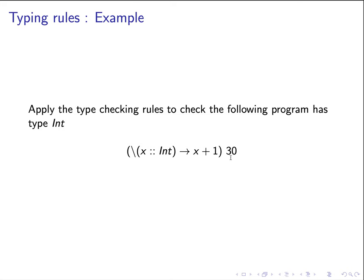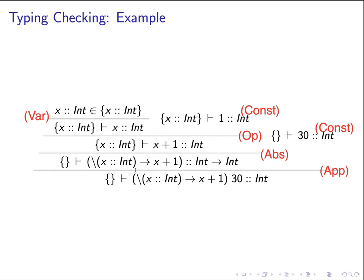By applying the typing rule, we use a deduction system implicitly, so the proof derivation is written bottom-up. We start off with the empty type environment and type check that the program has type integer. By looking at the shape of the program, it is clearly a function application, and therefore we apply the app rule. The app rule says that under the same type environment, if we can type check the function expression has type int→int, and the actual argument has type int, then we are done.